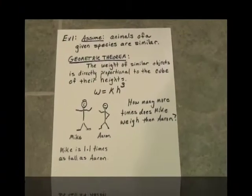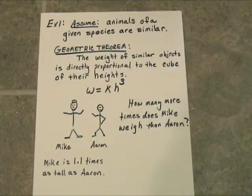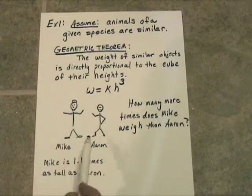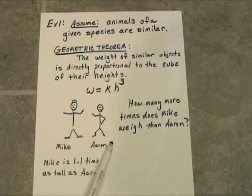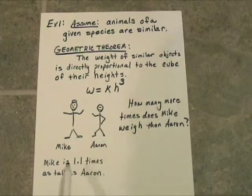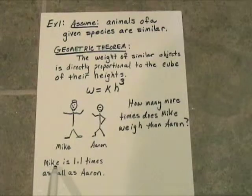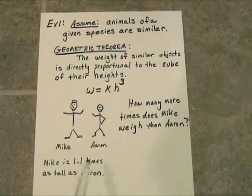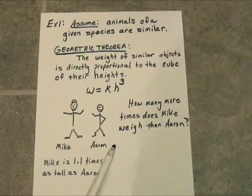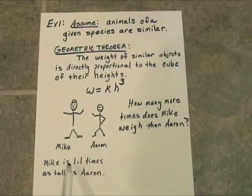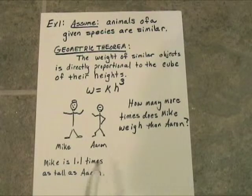Let's see our beloved Mike and Aaron. Now, Mike's a little bit taller than Aaron, just a few inches. In fact, we've measured them and determined that Mike is 1.1 times as tall as Aaron — so just a little bit taller. Knowing that, the height here is 1.1 times as tall as Aaron.